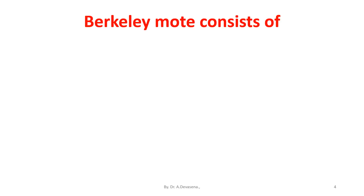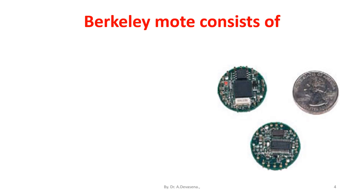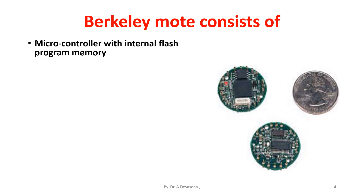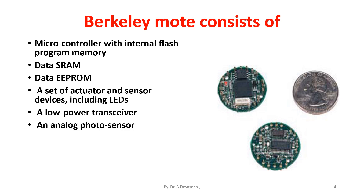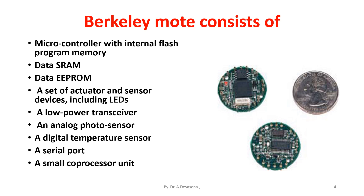Berkeley Mote consists of a microcontroller with internal flash program memory, data SRAM, data EEPROM, a set of actuator and sensor devices including LEDs, a low-power transceiver, an analog photo sensor, a digital temperature sensor, a serial port, and a small coprocessor unit.